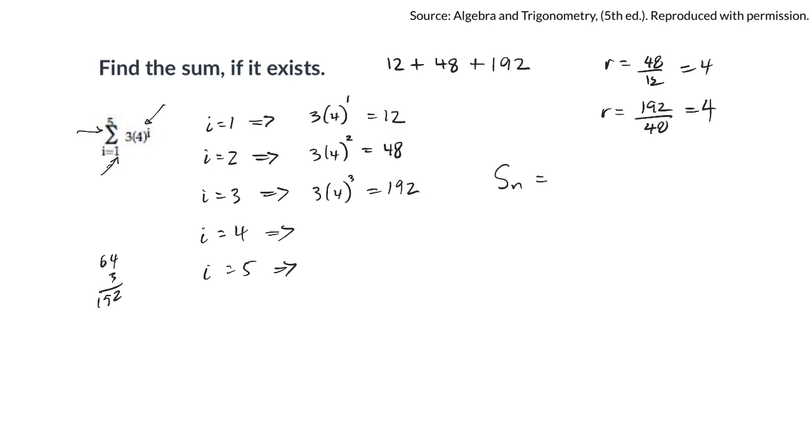And I can use this formula. So the sum is equal to a1 times 1 minus r to the n, all over 1 minus r. So the first term is 12, 1 minus the ratio is 4, and there's five terms. So 4 to the fifth, all over 1 minus the ratio is 4.